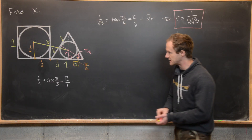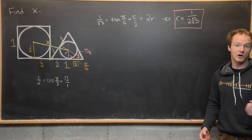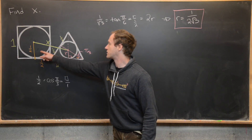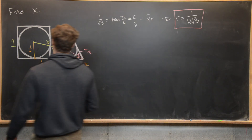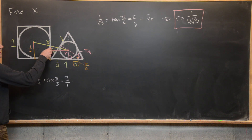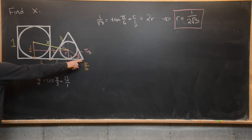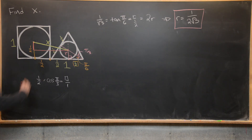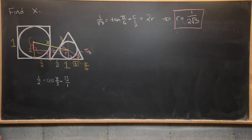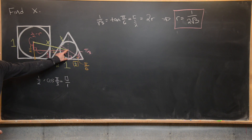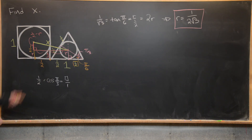We're now in good shape to finish the problem. Create a right triangle whose hypotenuse is the target distance x. Draw a horizontal line from the center of the circle in the square to directly above the center of the circle in the triangle. The horizontal leg equals 1/2 + 1/2 = 1. The vertical leg is 1/2 minus r — that's the height of the square's circle center minus the triangle circle's inradius — which equals 1/2 − 1/(2√3) = (√3 − 1)/(2√3).